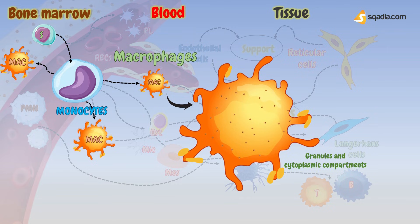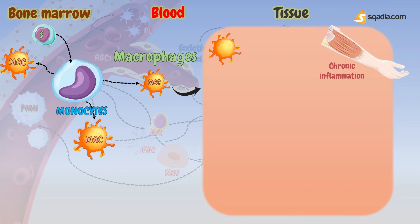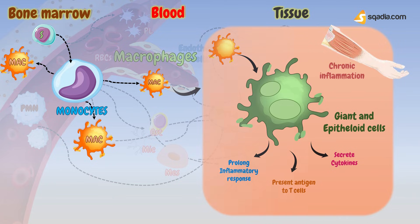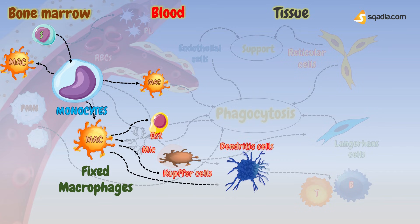Tissue macrophages are large cells with specialized granules and cytoplasmic compartments that are found in a wide range of sites. In some tissues, such as bone marrow and lymph nodes, these active macrophages are referred to as histiocytes. Inside tissues, macrophages take on a number of specialized forms. In sites of chronic inflammation, macrophages undergo further maturation and become multinucleated giant cells or epithelioid cells under the influence of T-cell cytokines. Epithelioid and giant cells participate in prolonging the inflammatory response by presenting antigen to T-cells and by secreting cytokines. These macrophages, when associated with a particular organ, are called fixed macrophages — like osteoclasts, microglia, Kupffer cells, alveolar macrophages, and dendritic cells.